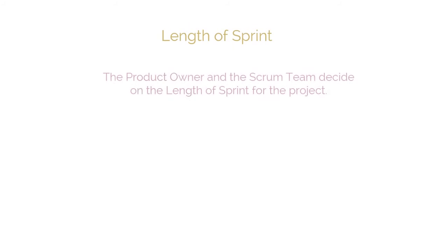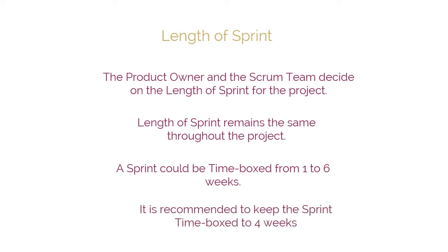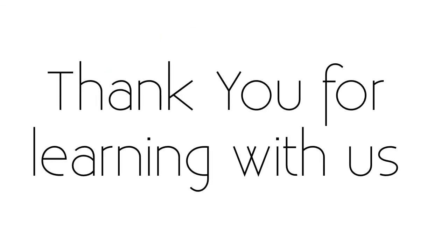Length of Sprint. Based on the various inputs including business requirements and release planning schedule, the product owner and the Scrum team decide on the length of sprint for the project. Once determined, the length of sprint often remains the same throughout the project. A sprint could be time-boxed from one to six weeks. However, to get maximum benefits from a Scrum project, it is always recommended to keep the sprint time-boxed to four weeks, unless there are projects with very stable requirements where sprints can extend up to six weeks.